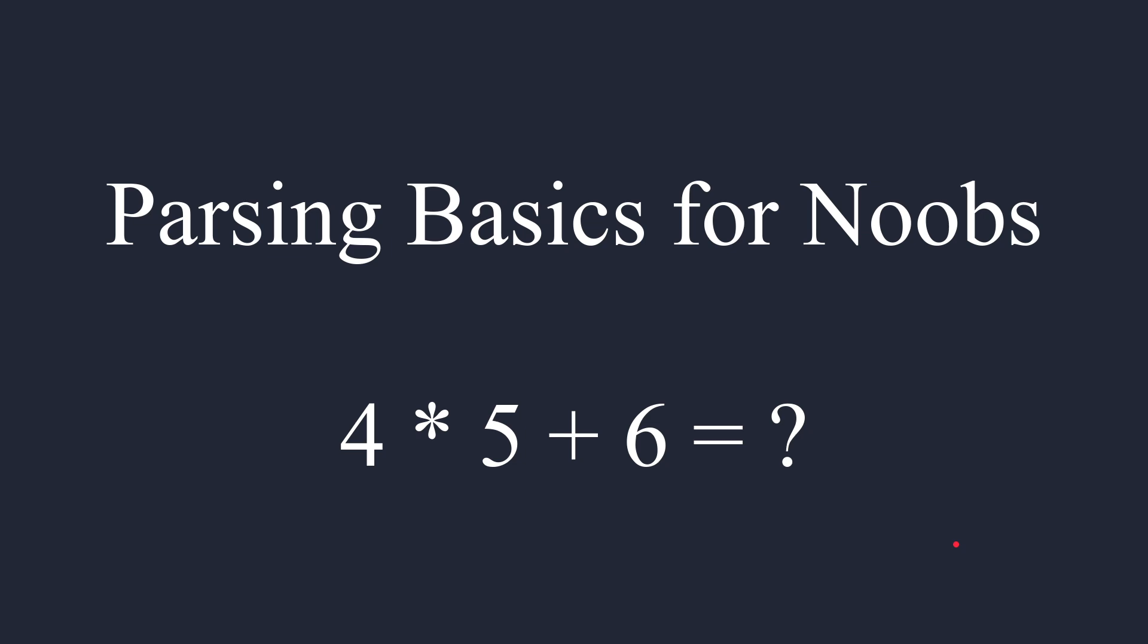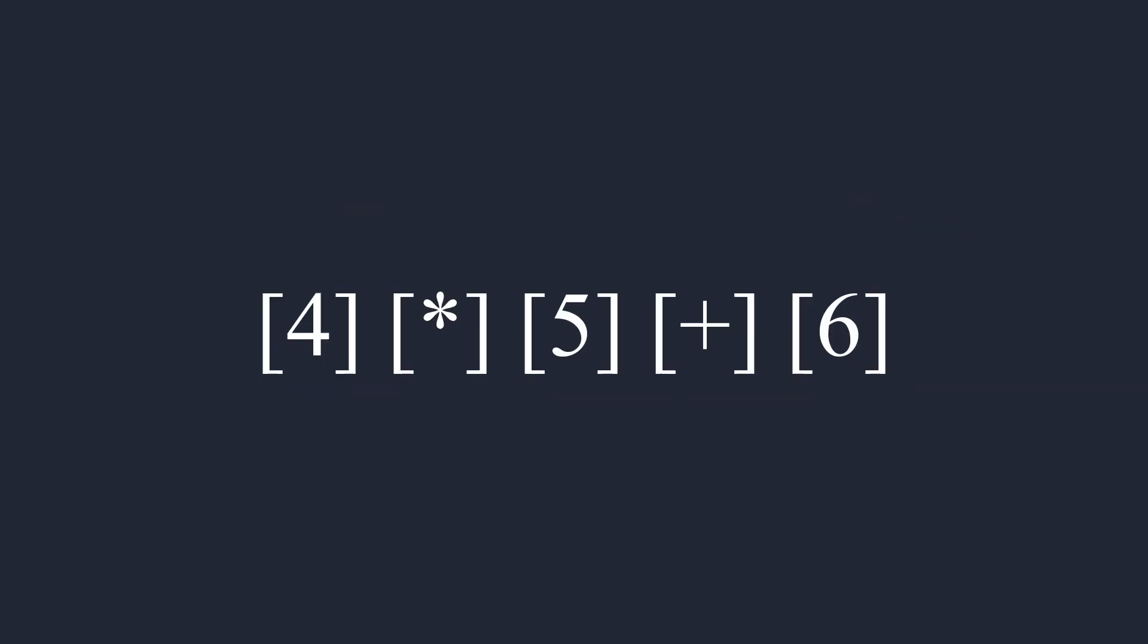So let's begin. Parsing basics for noobs. I want to parse this expression 4 times 5 plus 6. What is it equal to? How would we do that? I'm going to describe the algorithm. We break our expression up into tokens, which really just means it's either a number or it's a math symbol. We start with this variable for the accumulator where we're going to be accumulating our result. And then we're going to move from left to right through these tokens.